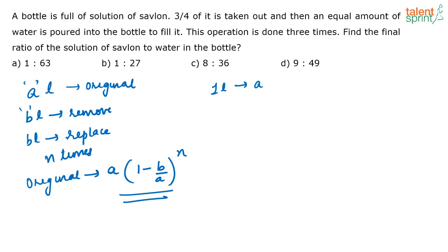So how much Savlon will be left? Out of this 1 liter, I am taking 3/4 liters. So how much Savlon will be remaining? It is 1 times (1 minus 3/4), that is 1/4, and I am doing it 3 times, so cube. So this is the amount of Savlon that is there in the final mixture.